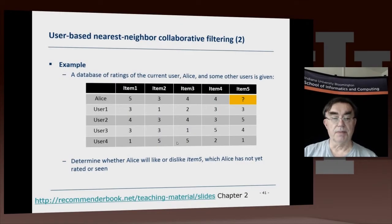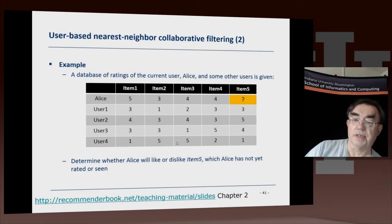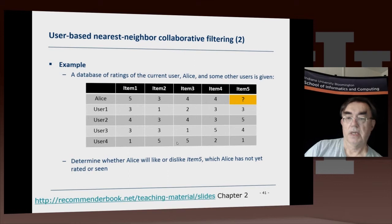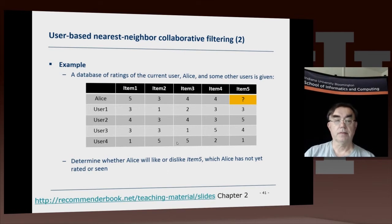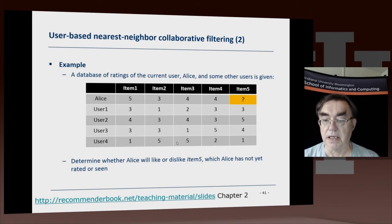So here we have this example. We have four items which are all rated by Alice and four users, user 1 through user 4. We want to find out about item 5, which users 1 through 4 are rated, but Alice is not. We want to know whether Alice will like that item or not.